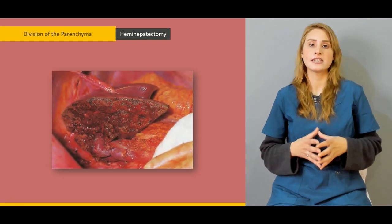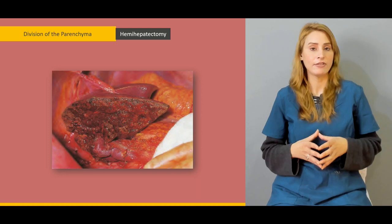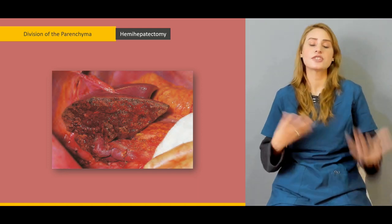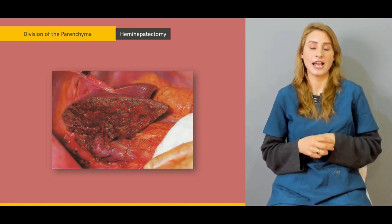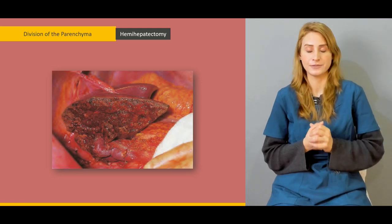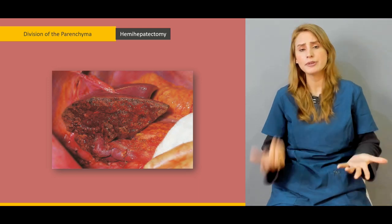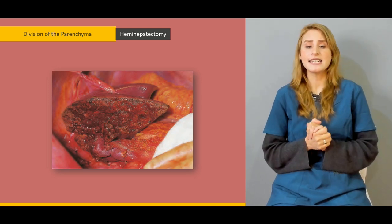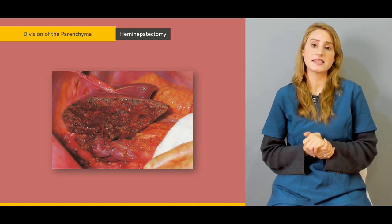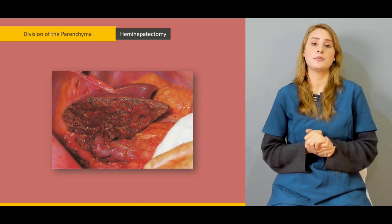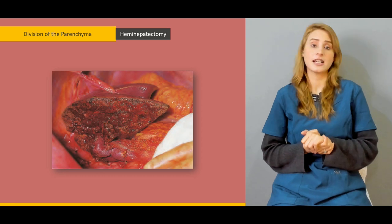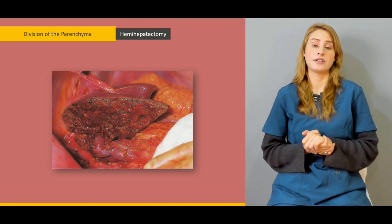Then we'll be talking about the division of the parenchyma — what surgical strategies and what surgical aspirators can be used for parenchyma division. We'll be talking in detail about the profuse blood supply of the liver which can lead to massive bleeding coming out of the liver.